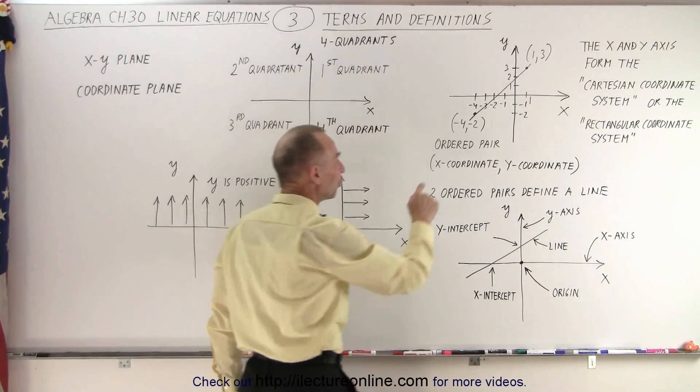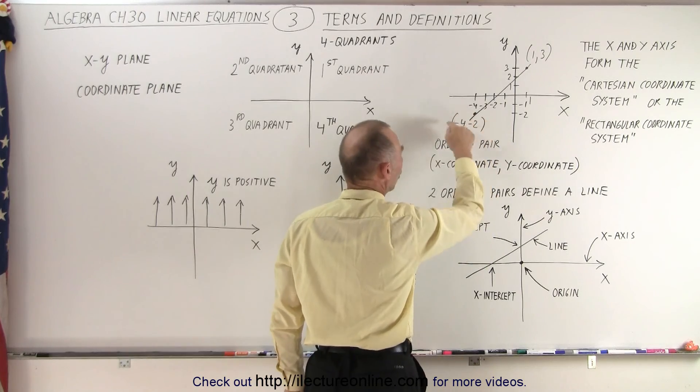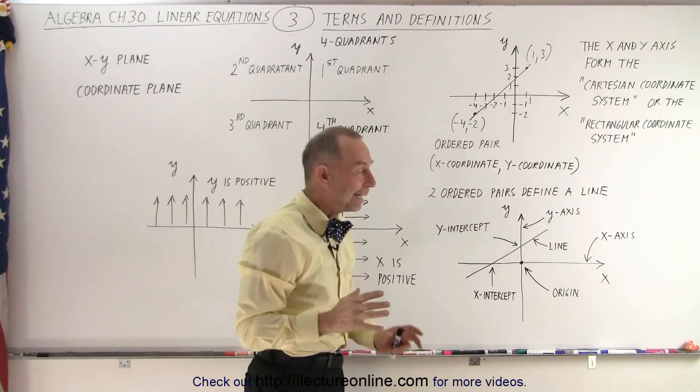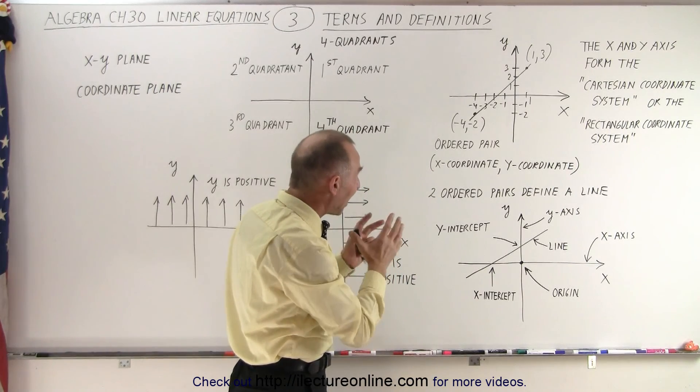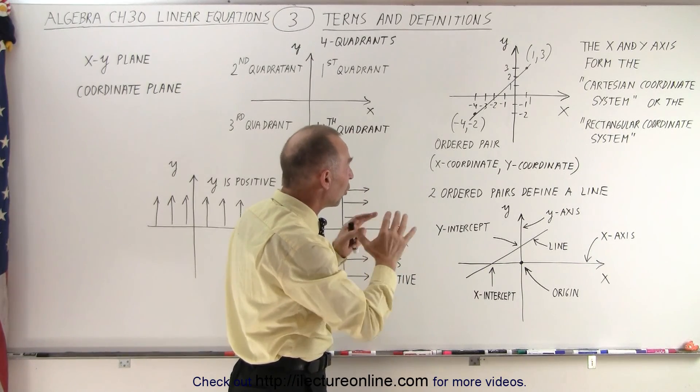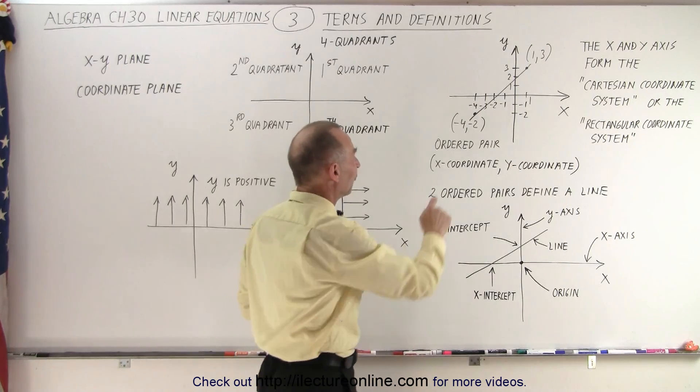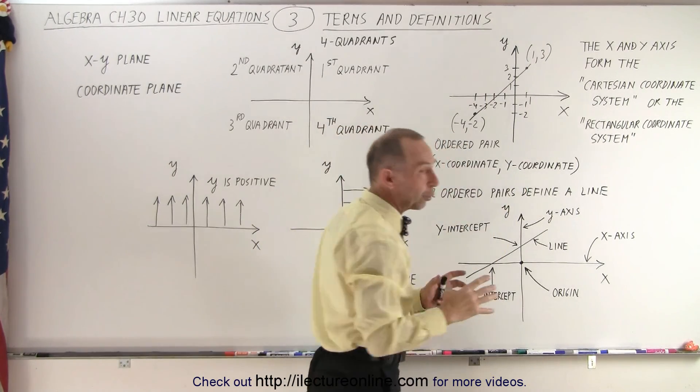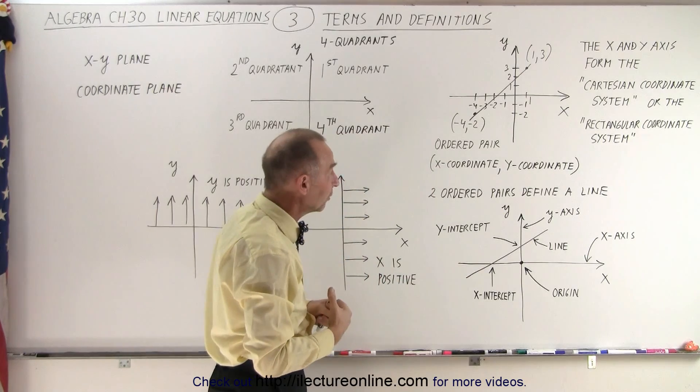And each of those points have an ordered pair of values. So that's called an ordered pair. A single point on the plane is defined by two values called the ordered pair. The first value is the x-coordinate and the second value is the y-coordinate. And yes, we'll learn how to draw these.